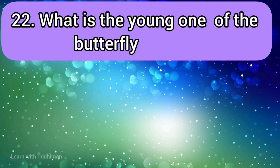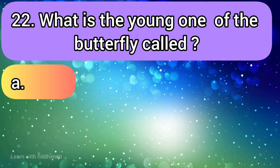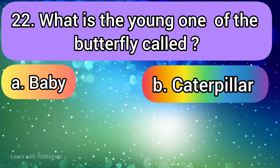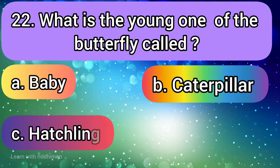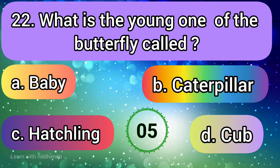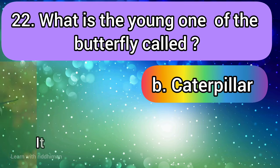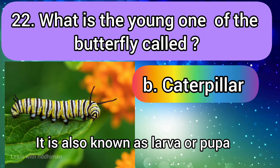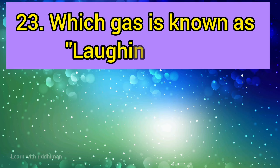What is the young one of the butterfly called? Baby, caterpillar, hatchling, cub. Answer is caterpillar. It is also known as larva or pupa.